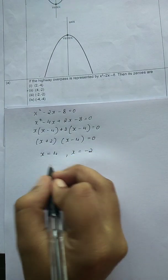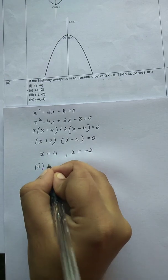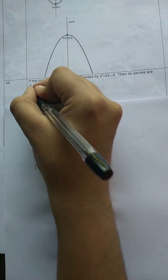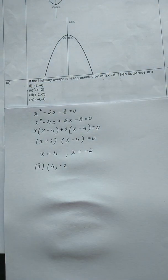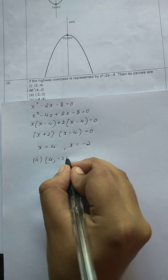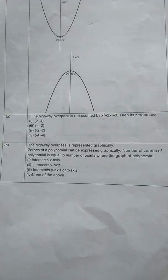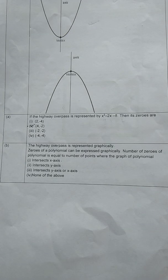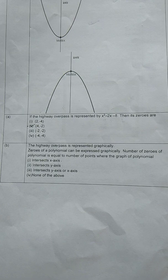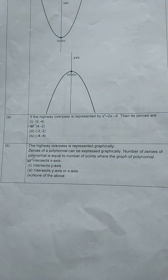So the second option is the correct answer. Our next question: the highway overpass is represented graphically. Zeros of a polynomial can be expressed graphically. The number of zeros of a polynomial equals the number of points where the graph of the polynomial intersects the x-axis.